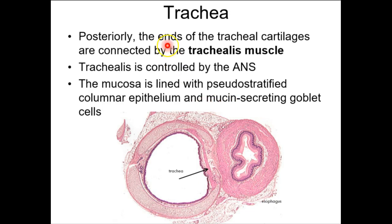The trachea is ciliated, and there's mucus, so that when you inhale something — like exhaust driving behind a diesel truck — that carbon gets into your airway, lands and gets stuck in the mucus, and the cilia push that mucus back up. We don't want that carbon pollution to make it deeper into our airways. If you're in a lot of pollution, you're going to produce more mucus to trap more of it. Or if you smoke — which is the same thing as sitting behind a diesel truck all day.